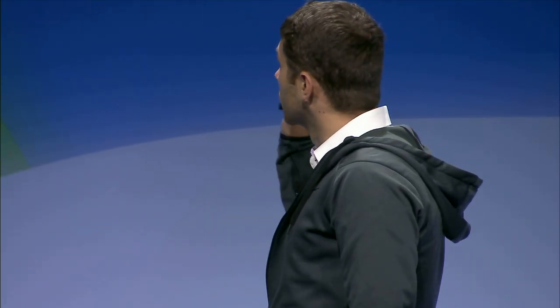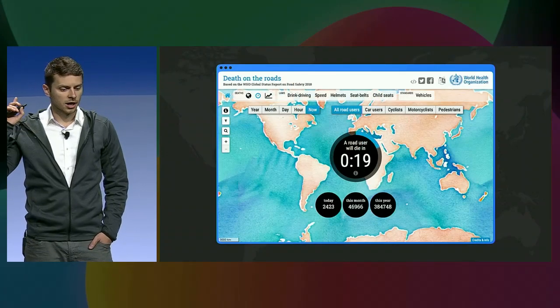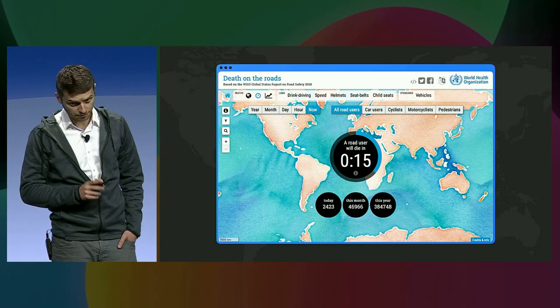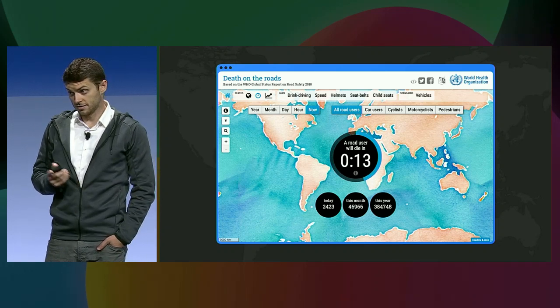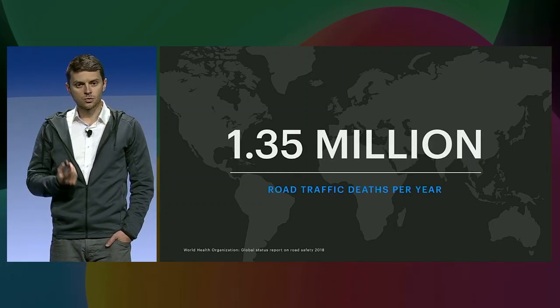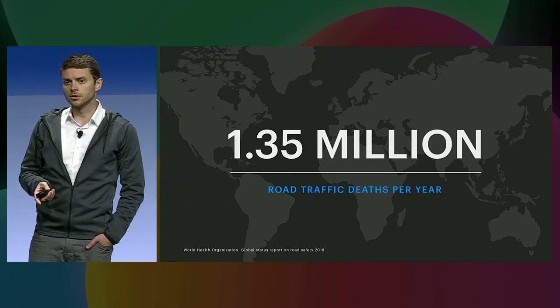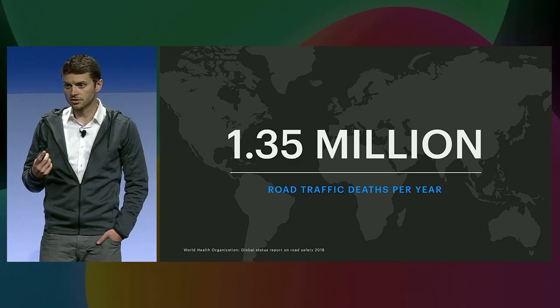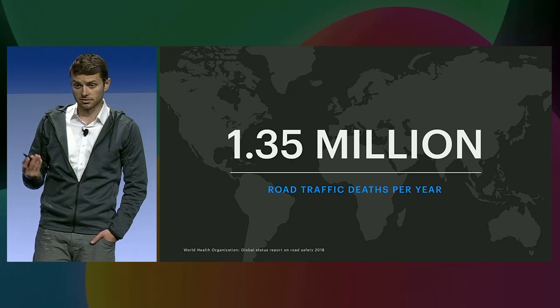Hi everyone. I lead the machine learning team at TRI, Toyota Research Institute. To get started with the motivation for what we're doing: someone dies on the road every 24 seconds. That's reality today. Another way to see this number is there are 1.35 million people that die in traffic fatalities per year. It sounds a bit surreal, but that's actually real.